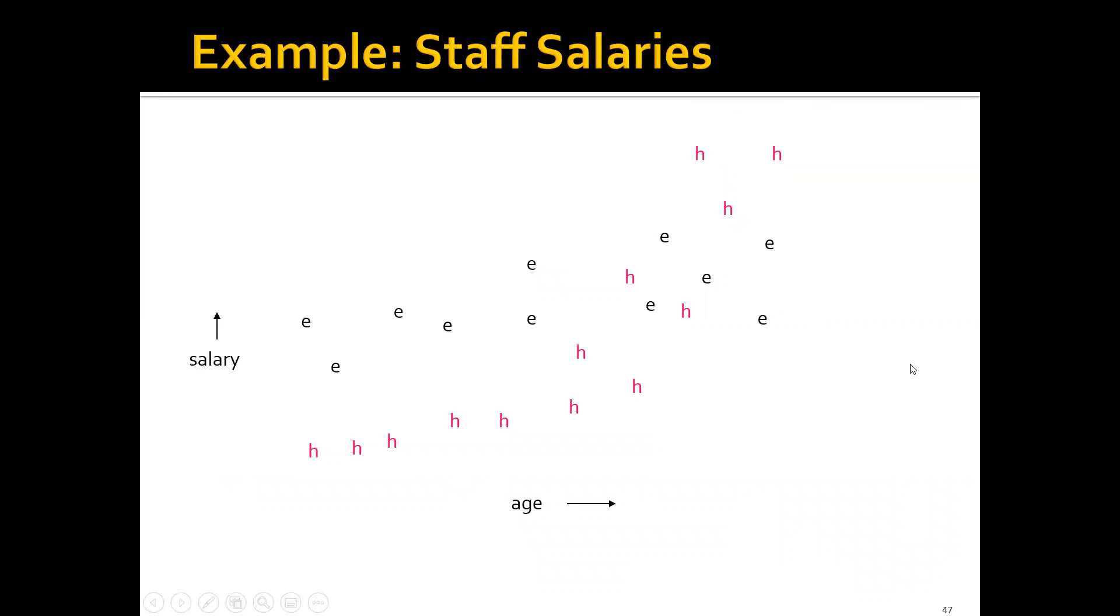For example, let's say that each of these points represents the age and salary of staff in some university. The E means these are staff for the engineering department and H means these are for the humanities department. Naturally, they have two clusters.